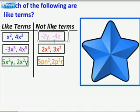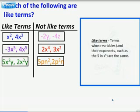Now let's look at the terms that are not like terms. This first group, the y and the z, are not the same variable, so they're not like terms. These have the same variable, but the exponents are different, so they are not like terms. And this one, both have p's and n, but the p's exponent is different, and so is the n's exponent, so therefore, they are not like terms.